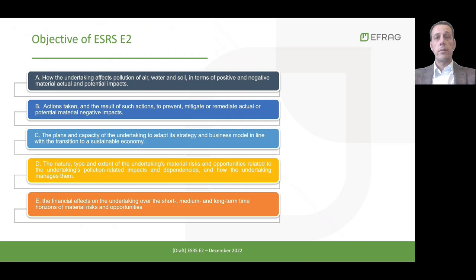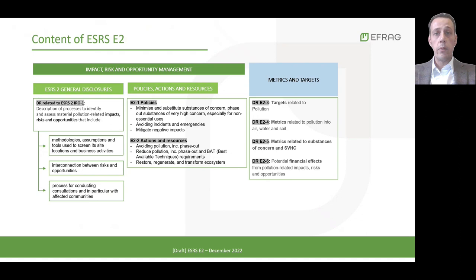The architecture of the standard is presented in the next slide. The standard is structured around two sections under which the disclosure requirements are included. The Impact, Risk and Opportunities Management section — in short, the IRO section — contains the disclosure requirement related to ESRS E2 and the two disclosure requirements on policies and actions. The section on Metrics and Targets covers the remaining four disclosure requirements.